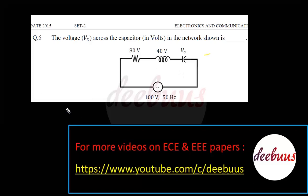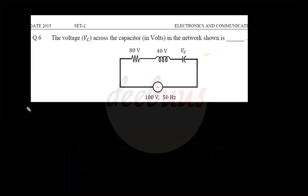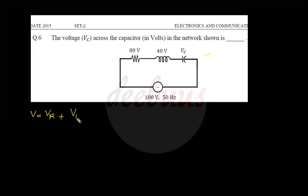This is an RLC series circuit and the applied voltage is 100 volts. The applied voltage V equals VR plus VL plus VC, but since the inductor and capacitor have complex impedance, we calculate using mean square values: 100 squared equals VR squared plus (VL minus VC) squared.